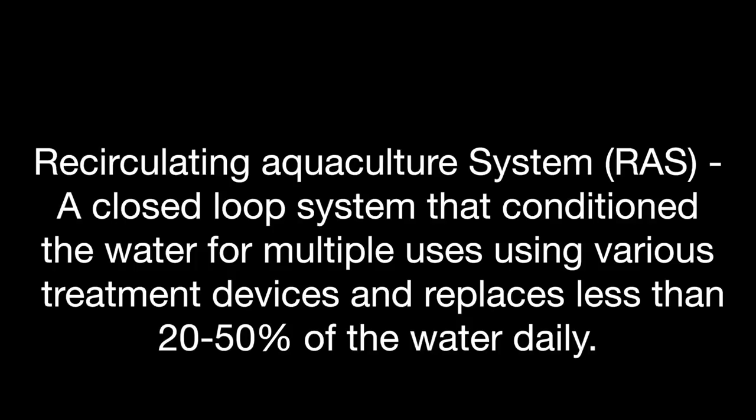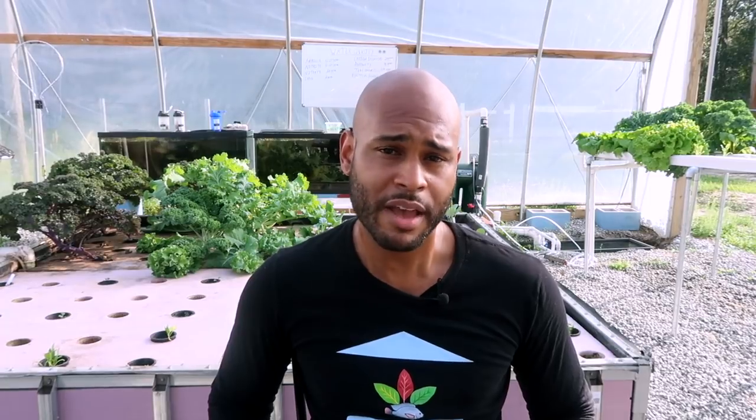The next term is recirculating aquaculture, also known as RAS. It is defined as a closed-loop system that conditions the water for multiple uses using various treatment devices, and replaces less than 20 to 25 percent of the water daily. One of the key takeaways is that the water is reused — that's one of the biggest benefits. The water can be conditioned and reused multiple times, which is very important today when fresh water is scarce and we need to be more conservative in how we use it.